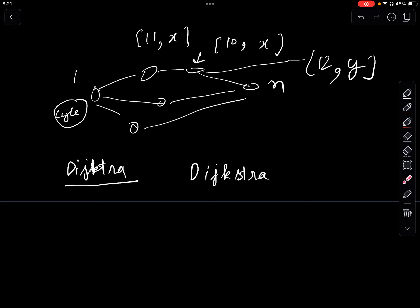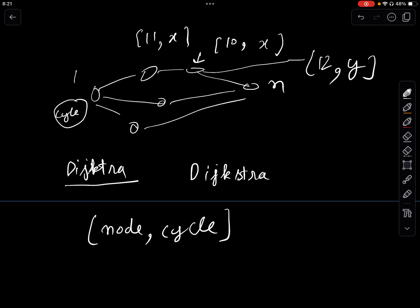This gives us a key insight: in normal Dijkstra, one node is unique — once a node comes out of the priority queue we've found its answer. But here, because cycles are present, one node alone is not unique. However, the pair (node, cycle) is unique. That's the only thing we need to figure out in this problem — after that we can use normal Dijkstra, but treating (node, cycle) as the state instead of just the node.